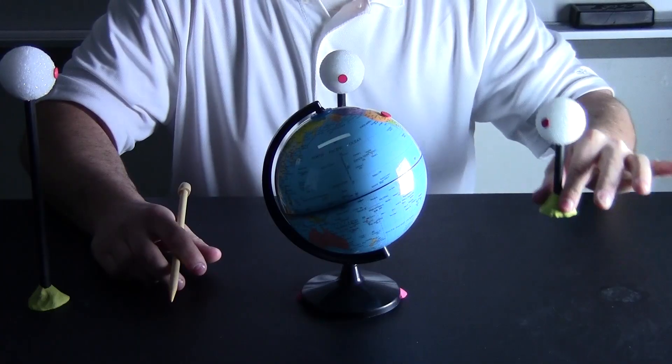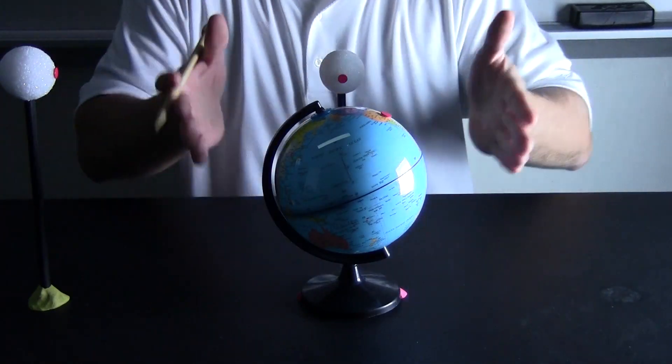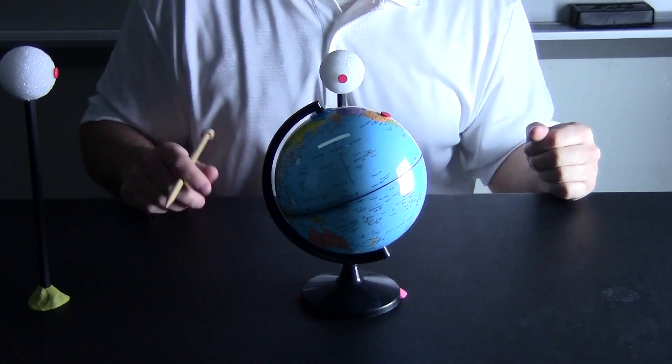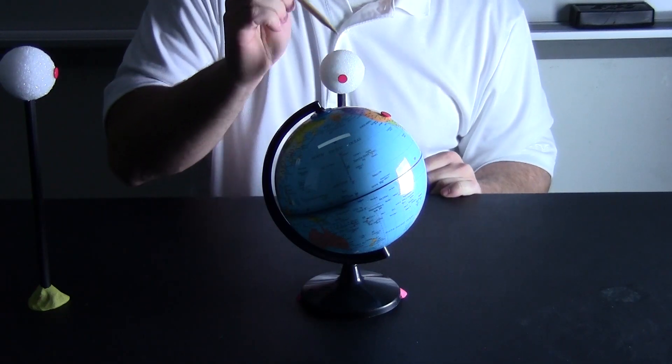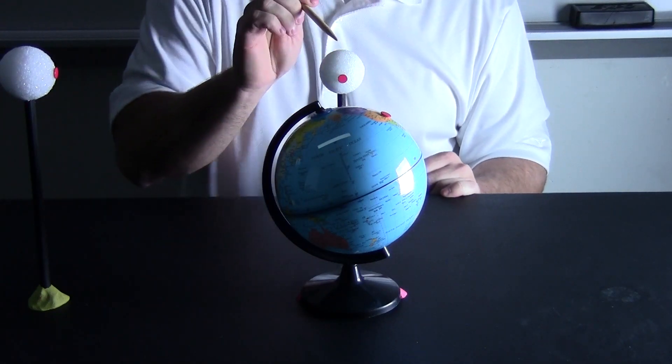Now as the moon moves around the earth seven days later, it is facing pretty much just like this. And you can see the right half of the moon is lit up. The left half is dark.